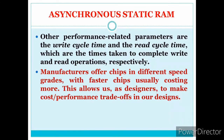Other performance parameters include write cycle time and read cycle time — the time taken to complete write and read operations respectively. These are design constraints that must be met. Manufacturers offer chips in different speed grades, with faster chips usually costing more.